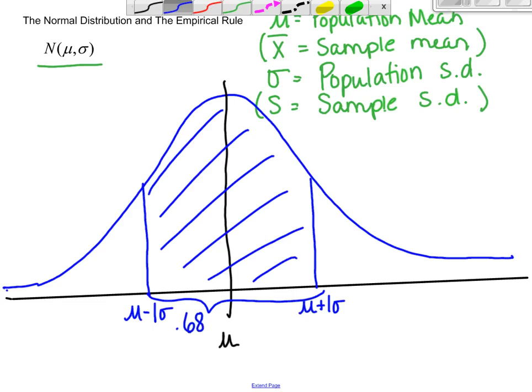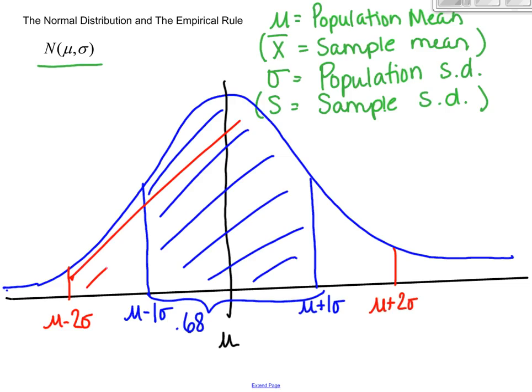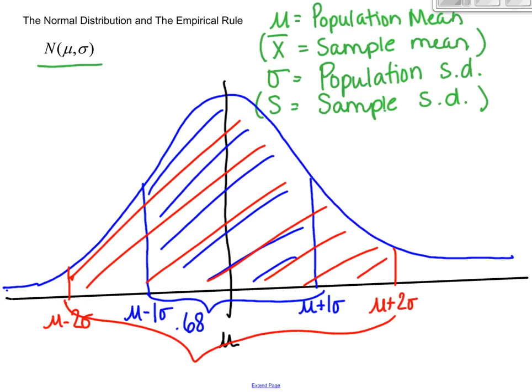If you want to go even further than that, so if you want to go the mean plus 2 standard deviations and the mean minus 2 standard deviations, if you look at this area right here, you are going to get 95% of the data or 95% of the observations or a probability of 95%.